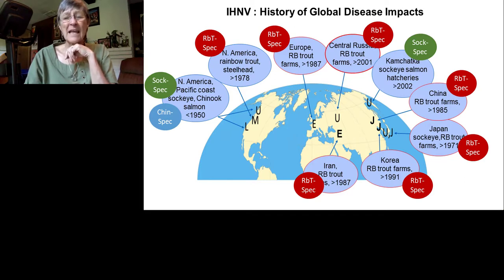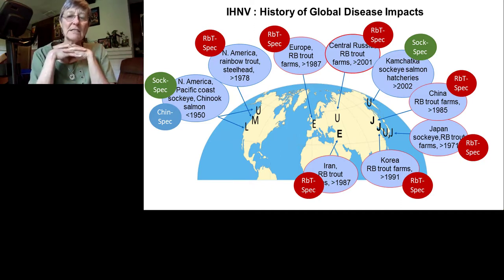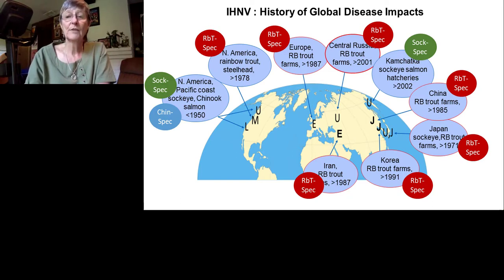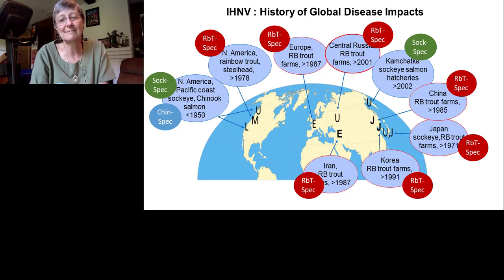After establishing in rainbow trout in North America and Japan, IHNV spread further. It appeared in rainbow trout aquaculture in China in 1985, Europe in 1987, Korea in 1991, and central Russia in 2001. In 2002, IHN was reported in sockeye salmon in eastern Russia, and most recently, an E-genogroup virus was detected in Iran in 2017.